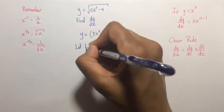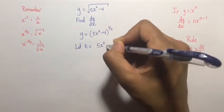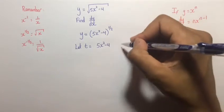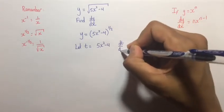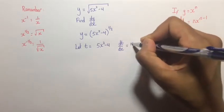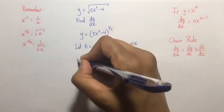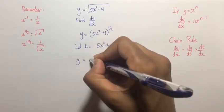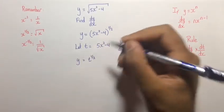let t be equal to 5x² - 4. Therefore dt/dx is equal to 10x, and y now becomes t^(1/2).